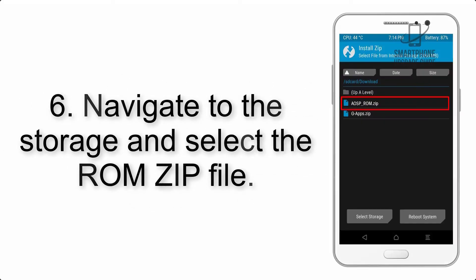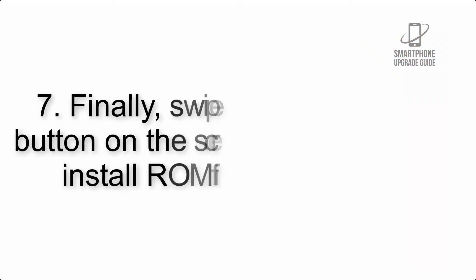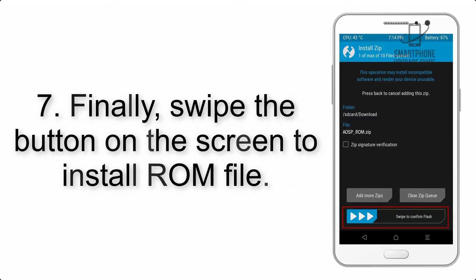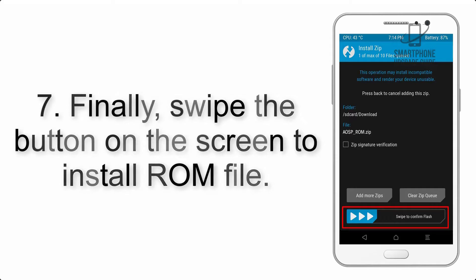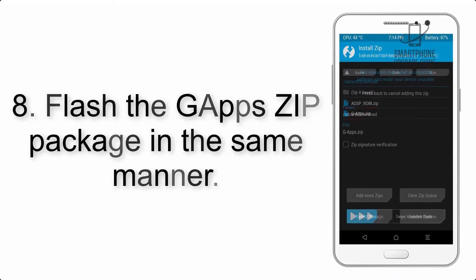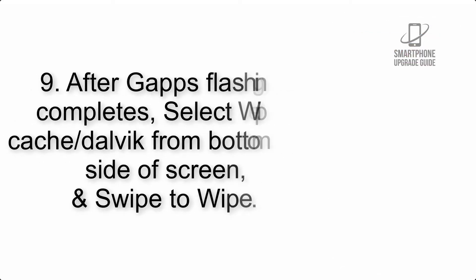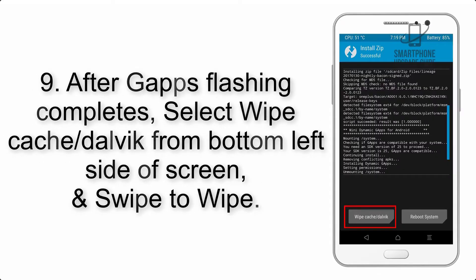Step 5: Go back to the recovery main screen and tap on the Install button. Step 6: Navigate to the storage and select the ROM zip file. Step 7: Finally, swipe the button on the screen to install the ROM file.